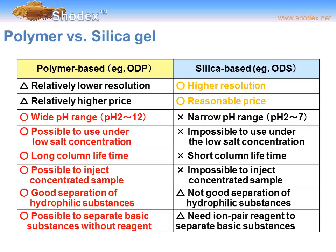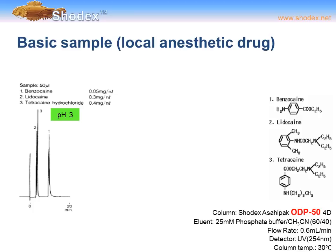With all the choices of HPLC columns available today, there are still only two basic choices: a polymer-based ODP column or a silica-based ODS column. A polymer-based ODP column has relatively lower resolution and higher price; however, it can operate at a wider pH range of 2 to 12, it's possible to operate under low salt concentrations, it has a longer column life, it allows injection of concentrated samples, provides good separation of hydrophilic substances, and can separate basic substances without a reagent.